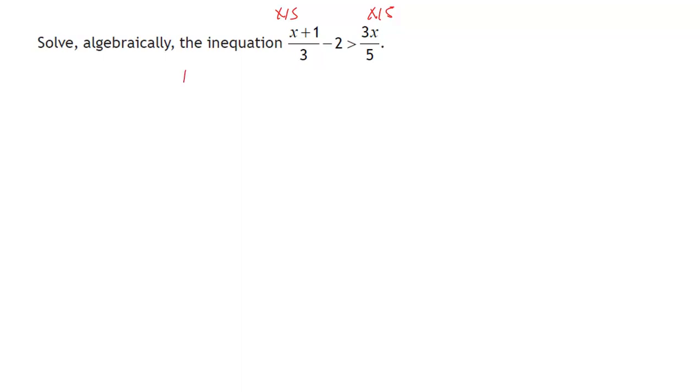So if I take the left-hand side, so I'll have x plus 1 over 3 take away 2, I'm going to multiply that whole side by 15. I know that's going to be greater than the 3x over 5, and again, I'm going to multiply that whole side there by 15.